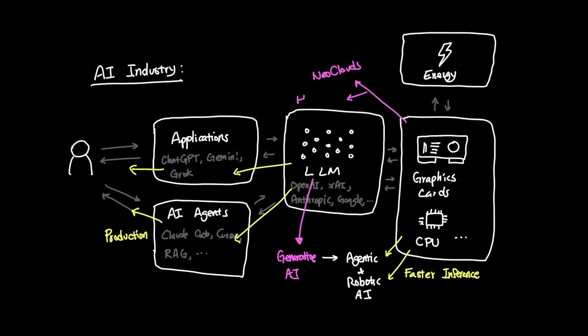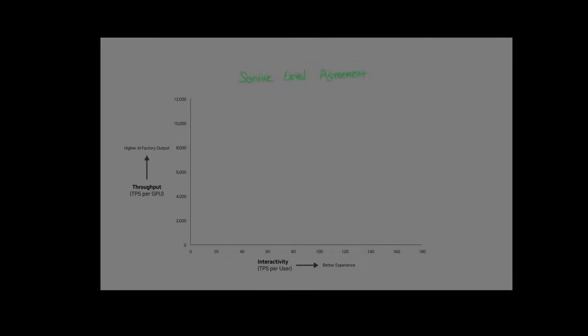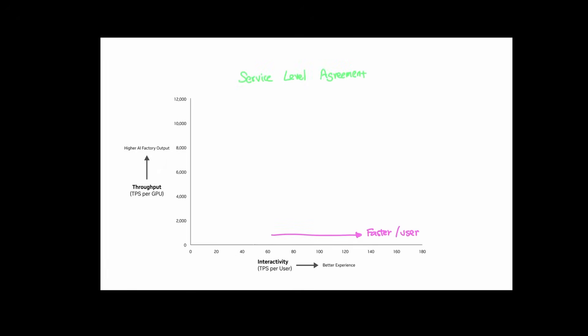In other words, as more NeoClouds and hyperscalers start to get their hands on NVIDIA's Vera Rubin and VL72, what we can expect as users all the way to the left is significant improvement in SLA in not only tokens per second per user, but also tokens per second per GPU.